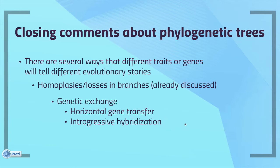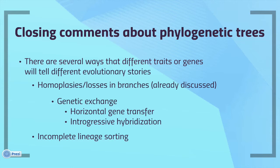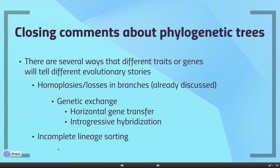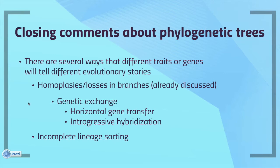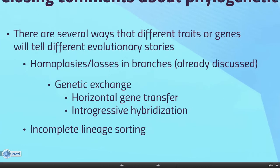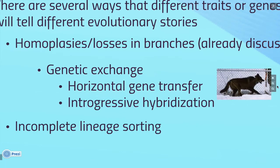In more complex taxa you see the same thing, but it gets a different term: introgressive hybridization. Hybridization can cause alleles from one lineage to bleed back into another. There's also what's called incomplete lineage sorting. These are all different phenomena that can result in different genes or different traits telling different evolutionary stories.